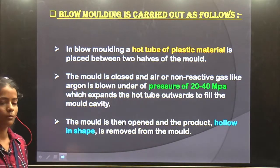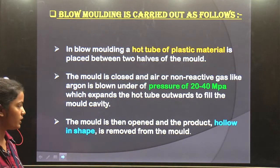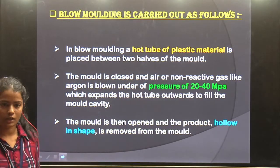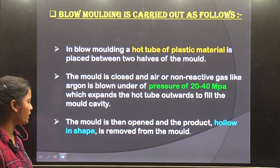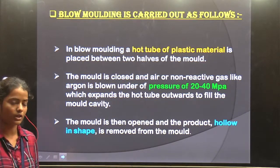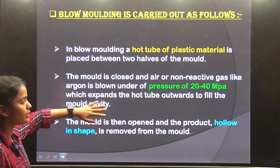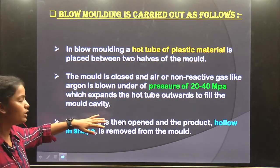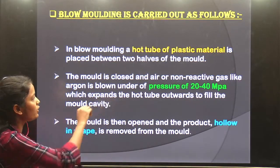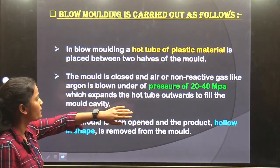It expands to take the shape of the mold. The parts are manufactured and formed. Then we will open the mold and we will have a hollow shape of the product. We will take out the outer parts. There is a lot of plastic material that this process allows us to shape using the mold.